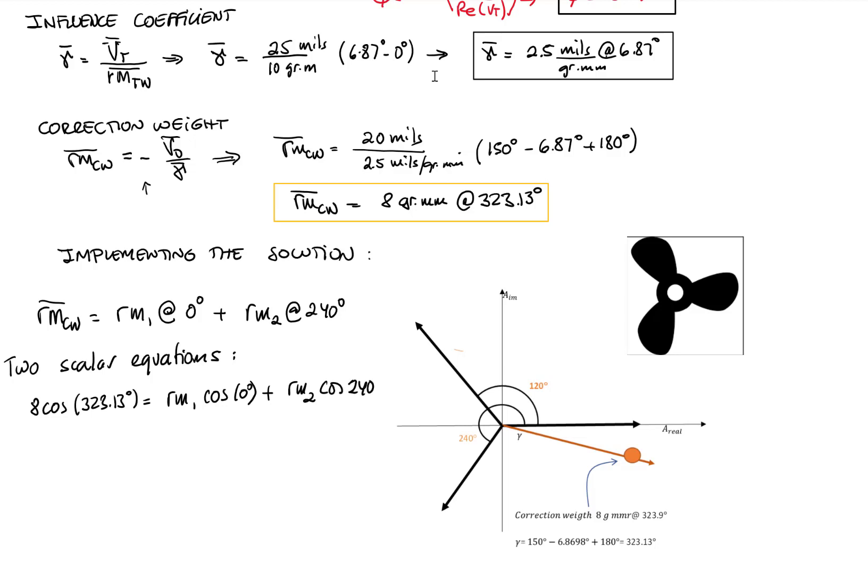And the other equation will be 8 sine of 323.13 equals my first mass at sine of 0 and the second mass at sine of 240. This is a system of two scalar equations with two unknowns.